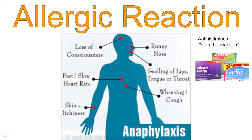In the most serious allergic reactions, we call this anaphylaxis. That's when a person has a loss of consciousness, or their heart rate starts to go very fast or very slow. They may be very uncontrollably itchy. Their breathing may become wheezing or coughing and they're not able to get a good breath in, or their lips, tongue, or throat may swell to a point where they feel like they're choking. In this case, immediate response is needed — 911 needs to be called, and if there's an EpiPen in the area, an EpiPen needs to be administered to this person.